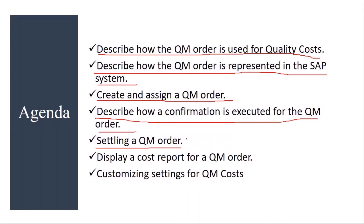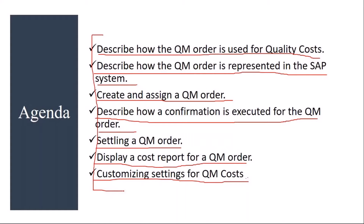We will cover settling a QM order — how the settlement of a QM order happens. We'll also look at displaying a cost report for a QM order: how cost reporting happens, and the various methods to display the costs. Finally, we'll cover the customizing settings for QM cost — how to configure the system to capture quality costs. These are the topics we will be covering in quality costs.